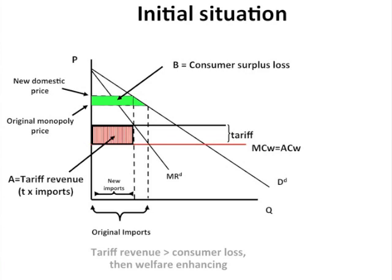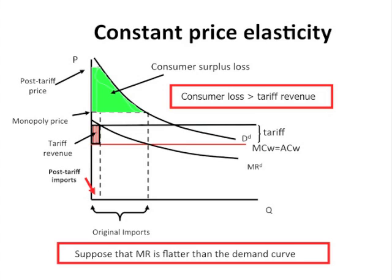Just to recall, for the case with linear demand domestically, where the marginal revenue curve is steeper than the demand curve, we found that a foreign monopolist producing this product at MCW — that's the marginal cost of production in the world — would initially charge this original monopoly price. A tariff would increase the cost for the foreign monopolist operating inside this market, would reduce imports consequently, and increase the domestic price. We found that the consumer surplus loss given by the green area would be smaller than the tariff revenue paid for by the foreign monopolist.